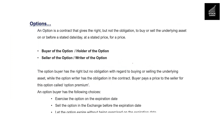So what is an option? An option is a contract that gives the right, but not an obligation, either to buy or to sell the underlying asset on or before a stated date — this date is called the expiry day — at a stated price, which is called the strike price or exercise price.